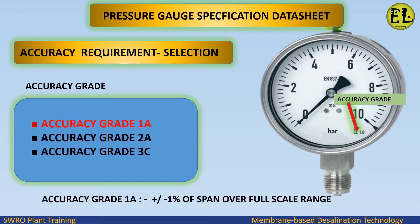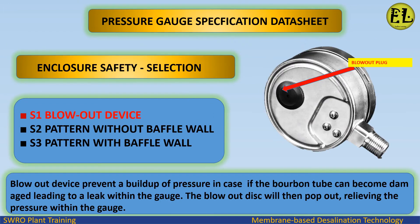Closure safety selection. Options are S1 blowout device, S2 pattern without baffle wall, and S3 pattern with baffle wall. The blowout device prevents a buildup of pressure in case the Bourdon tube becomes damaged and leaks within the gauge — the blowout disc will then pop out, relieving the pressure. We select the blowout device for this application.